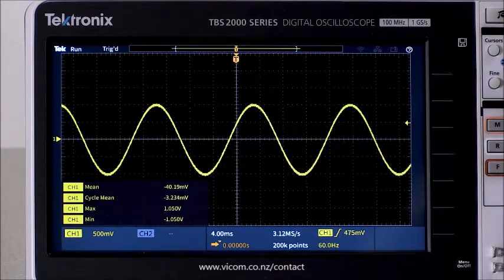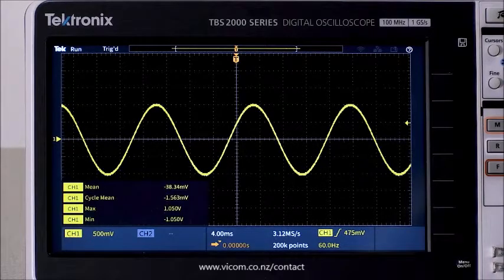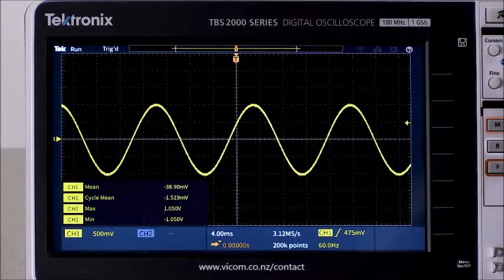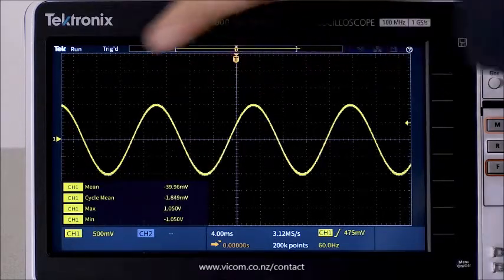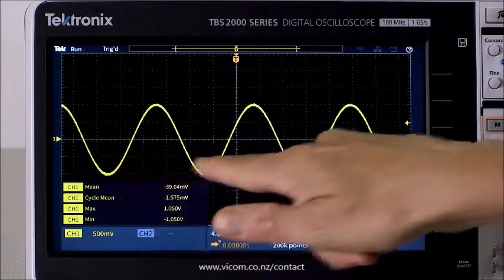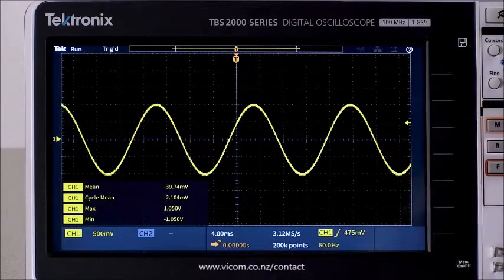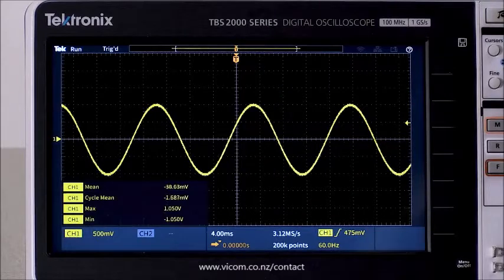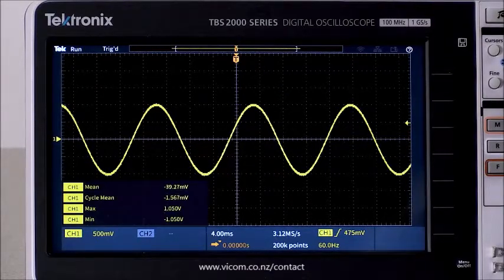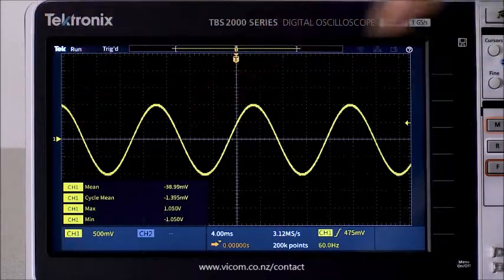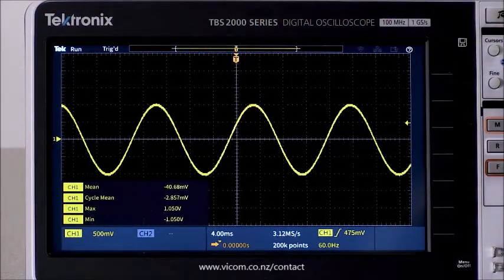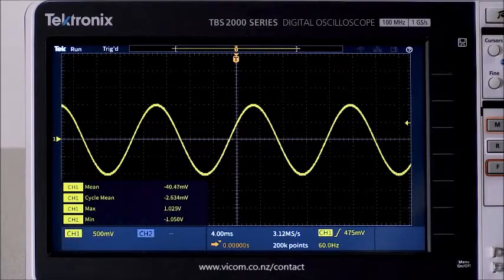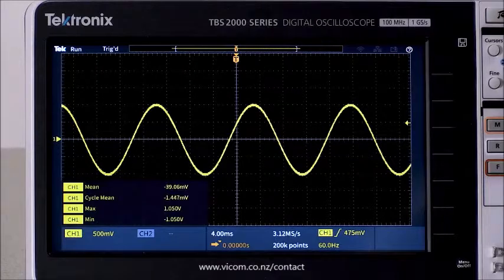Remember, the mean measurement is looking at all the points on the screen. We have about three and a half positive cycles, but we have about three and three quarters negative cycles. So the mean is negative because we have more negative cycles than positive cycles. The cycle mean measurement automatically finds the first cycle of the sine wave and performs the measurement over just that cycle. For a periodic signal like this one, cycle mean is a better choice.